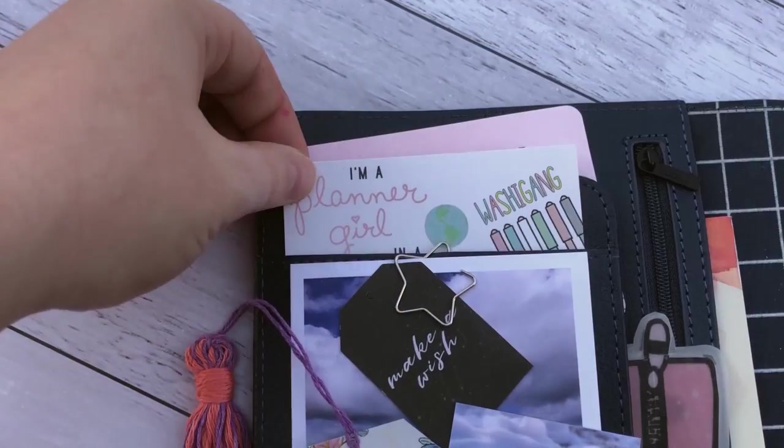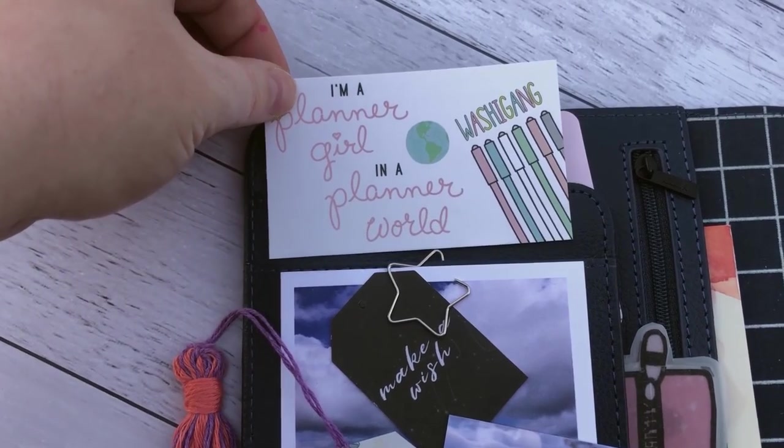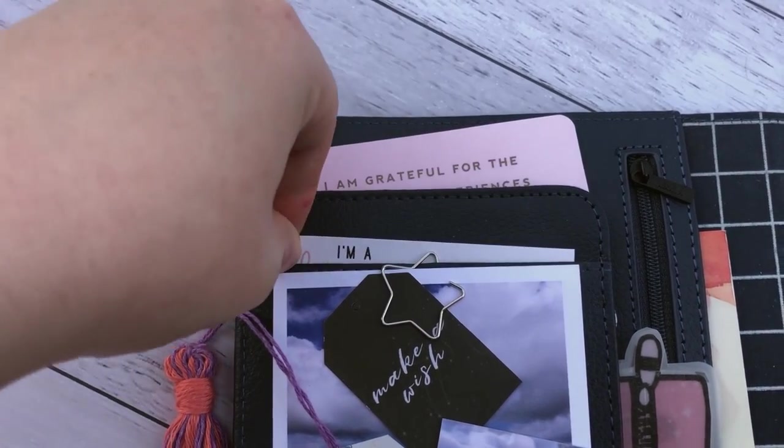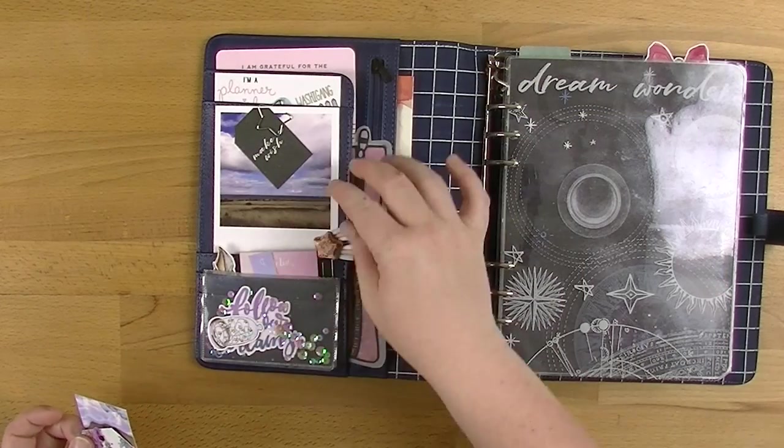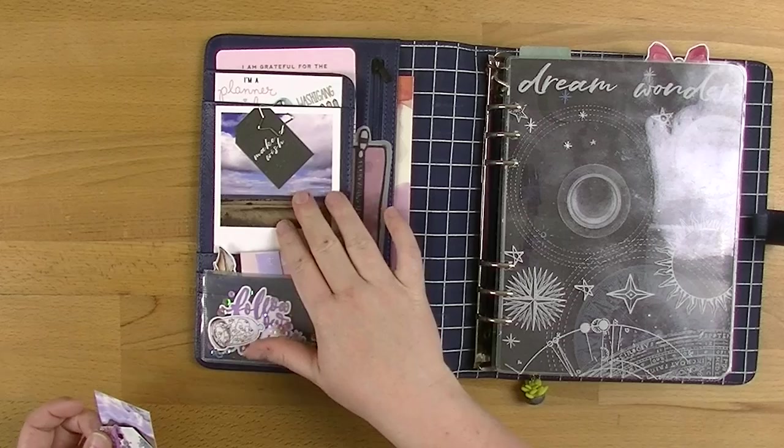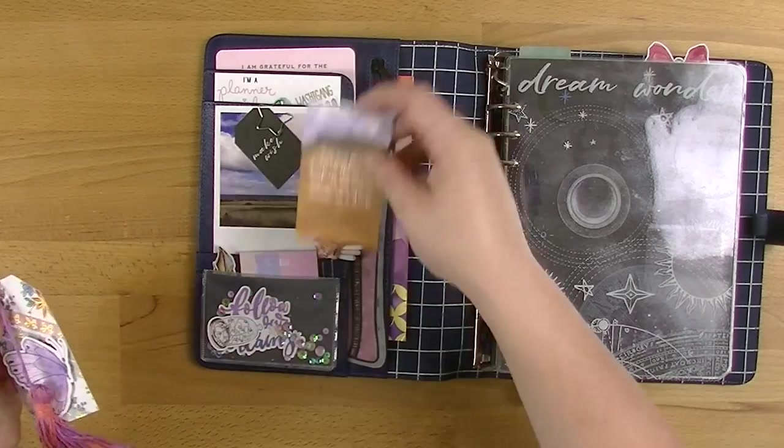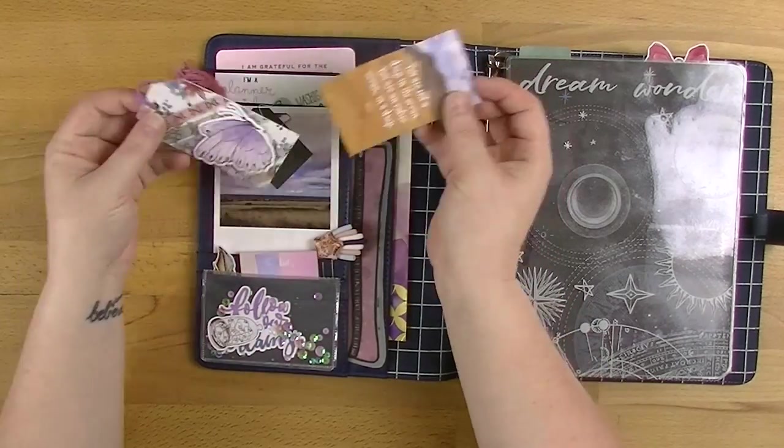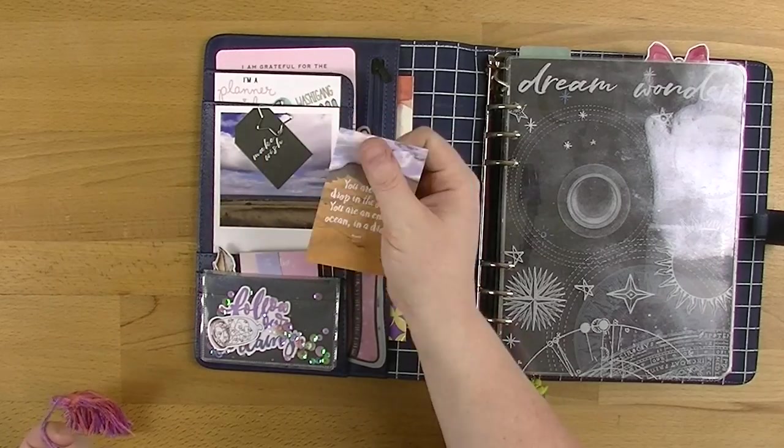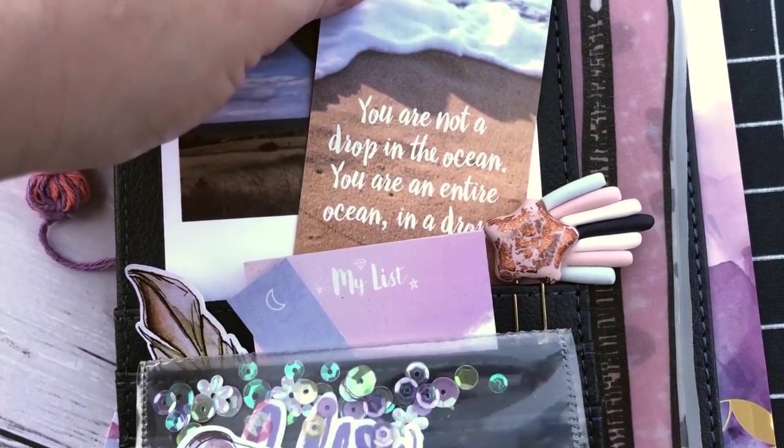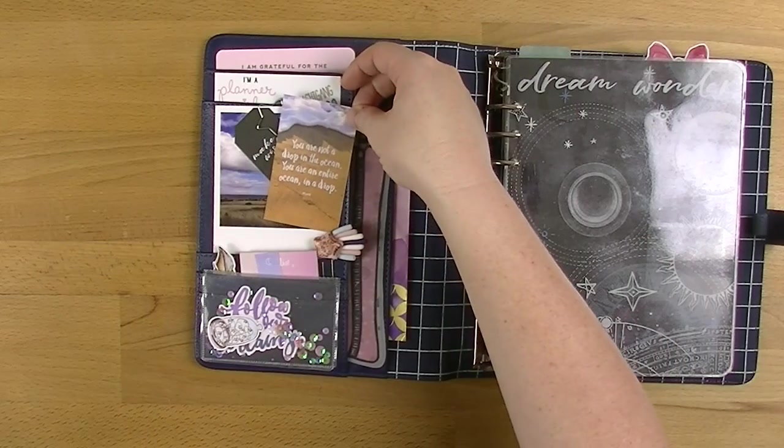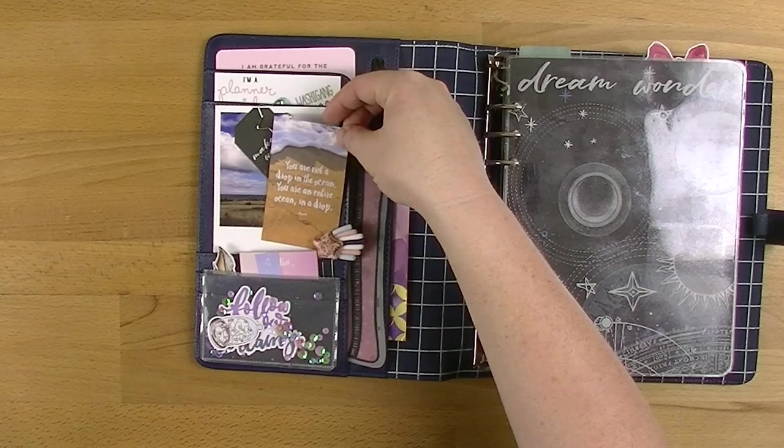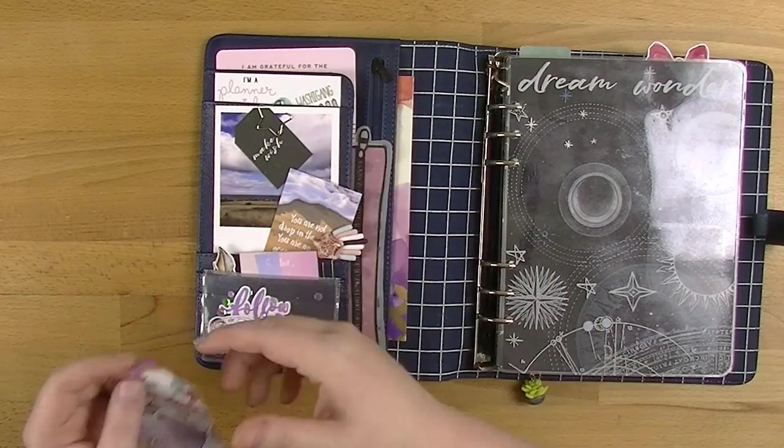I have my little washi gang business card that says I'm a planner girl in a planner world. I have a photo back here which is kind of covered up, but I know that it's there. This is just Point Turn, which is where my grandparents lived. I love the contrast in the colors. I've got a little card here from Endota Spa. I love Endota, I think it's my favorite place to go when I need to relax. This little quote says you are not a drop in the ocean, you're an entire ocean in a drop. I just love it.